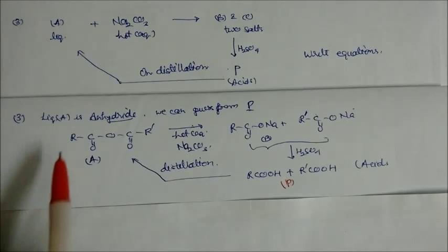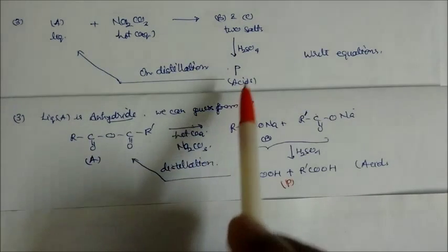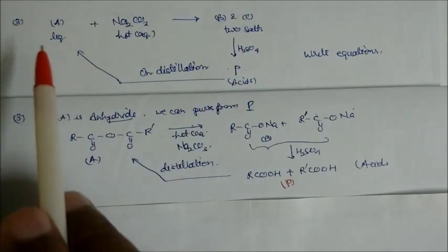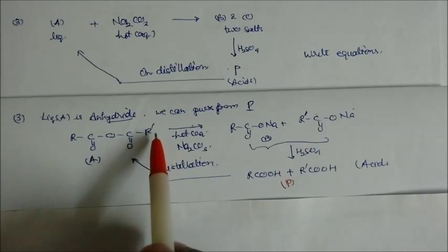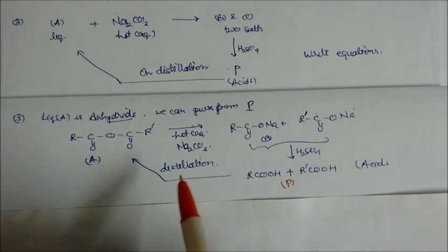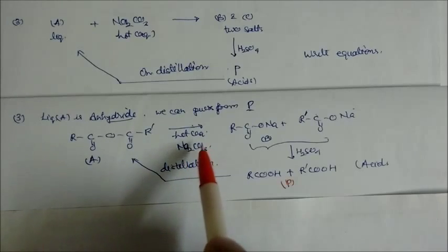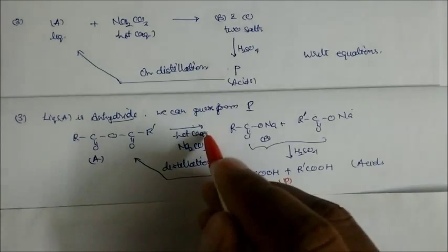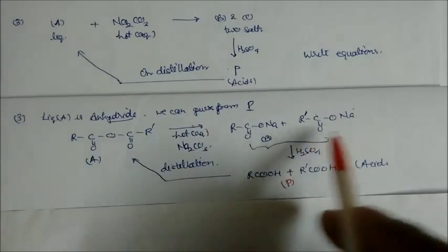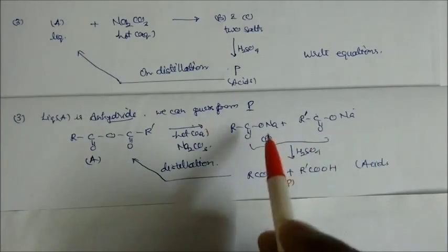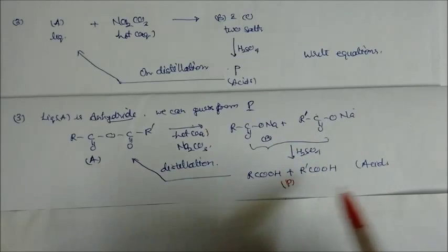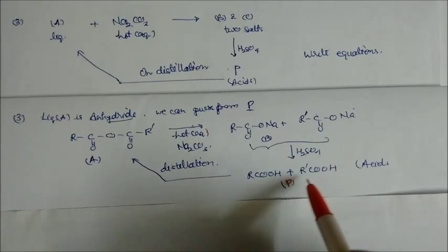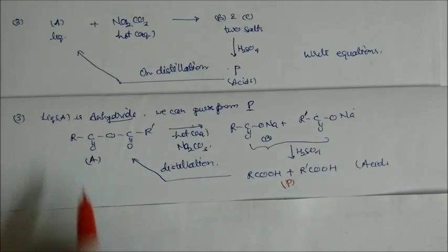Liquid A is an anhydride. We can guess from P, because on distillation we get liquid A again. We write R₁CO-O-COR₂, where R₁ and R₂ are two different alkyl groups — so it is a mixed anhydride. In presence of hot concentrated aqueous sodium hydroxide we get two different salts, and on acidification these give two different carboxylic acids. On distillation and removing water we get the anhydride again.